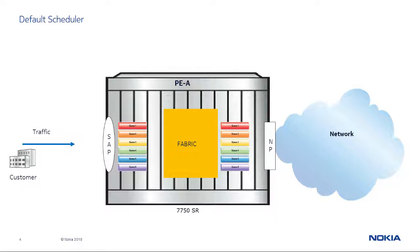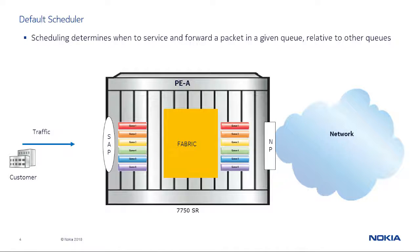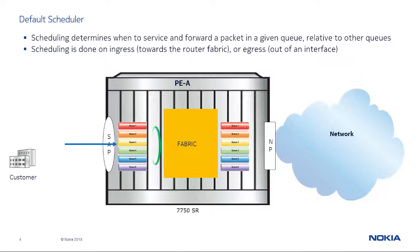The first step in the quality of service solution is to classify customer traffic as it is received on ingress. This is the process of identifying different types of packet fields such as TOS bits, source or destination IP addresses, and protocol types. Once traffic is classified, it is assigned one of eight forwarding classes, so each will receive individual treatment with different resources. Forwarding classes are placed into queues, and the next step is to schedule the traffic — determining when to service and forward a packet in a given queue relative to other queues. Scheduling is done on ingress towards the router fabric, or egress out of a router interface.